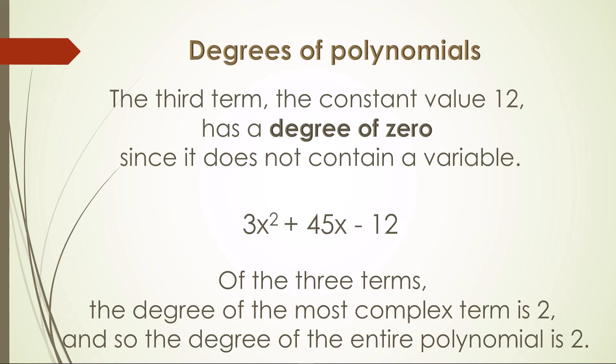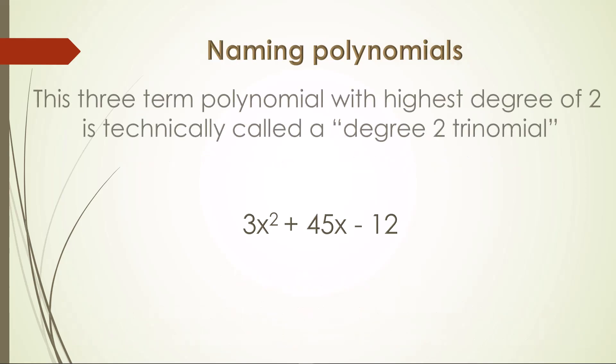Of the three terms, the degree of the most complex term is 2, and so the degree of the entire polynomial is 2. This three-term polynomial with highest degree of 2 is technically called a degree 2 trinomial.